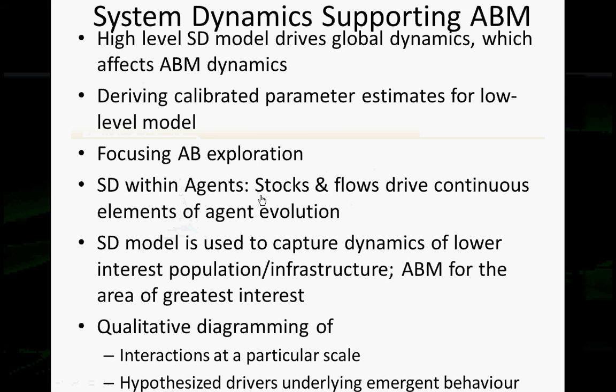Another way is using system dynamics within agents — stocks and flows within an agent driving continuous elements of agent evolution. In another situation, a system dynamics model can capture the dynamics of lower-interest populations or infrastructure, while ABM is used for areas of greatest interest. For example, in a model of diabetes within Saskatchewan, you don't want to simulate the full population at an agent-based level. A system dynamics model could simulate development of diabetes in the broader population, and the flow of people developing diabetes could translate into producing diabetic agents that are then tracked in great detail.